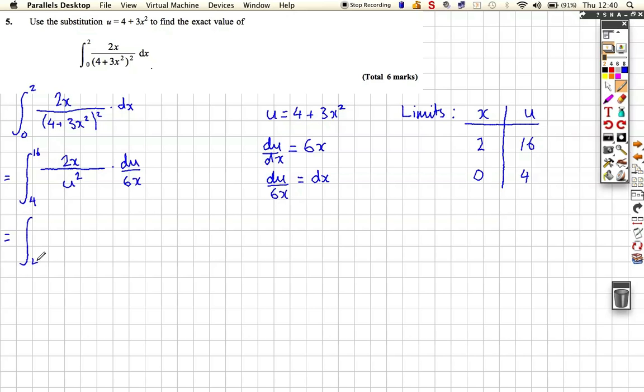So really, we're running from 4 to 16, and we're going to get 1 over, or the 2, so it's going to be 1 over 3u squared du. So that seems like a whole lot more simple than this one up here.